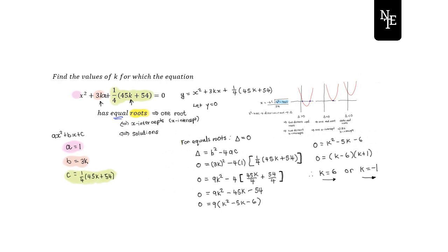To summarise: the two values k = 6 or k = −1, when substituted into the original given expression, will produce a quadratic that has only one x-intercept — that is, equal roots.